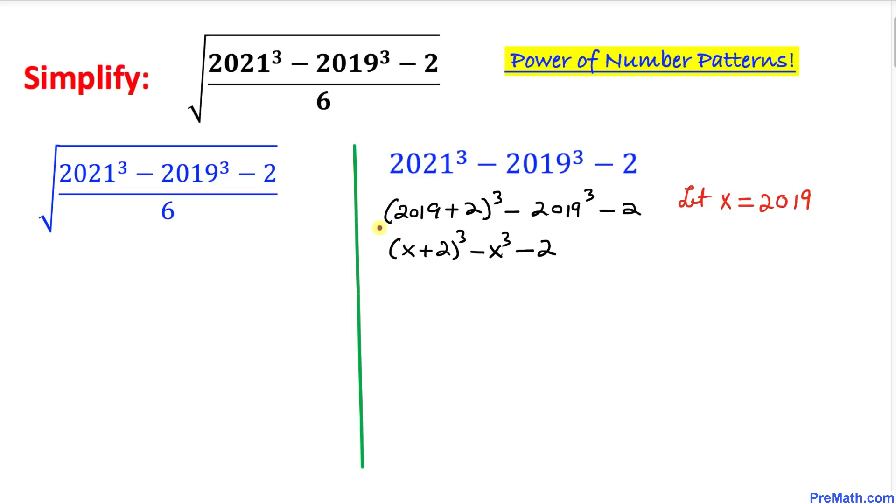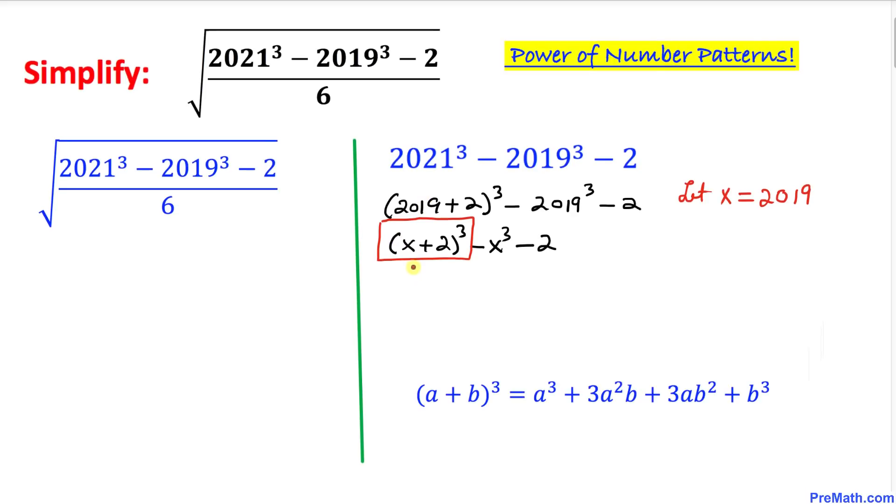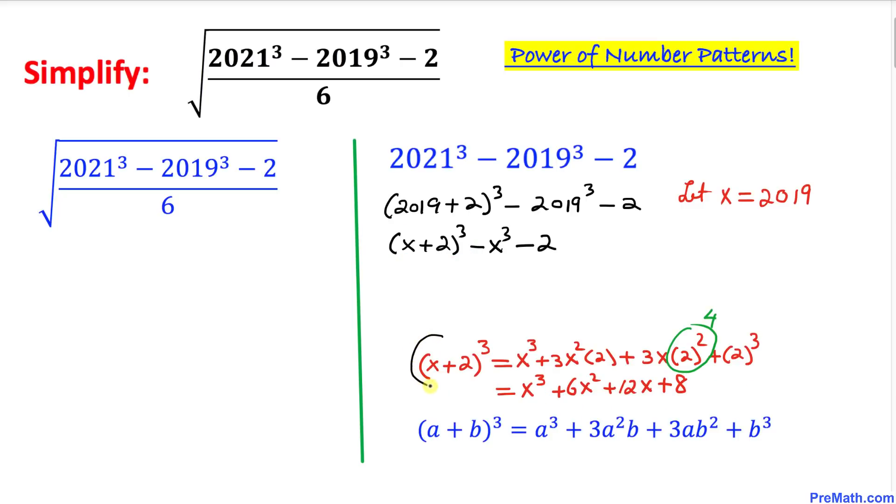Now let's focus on this binomial. We will be taking care of taking the power 3, the cube. Now we are going to expand this binomial by using this formula. Here I have applied that formula on this (x + 2)³. If we expand this one, it could be simplified as x³ plus 6x² plus 12x plus 8.